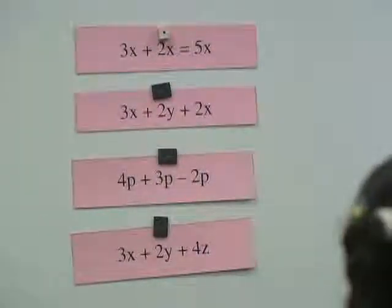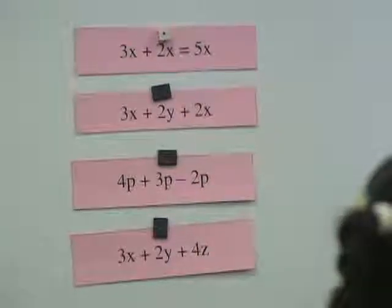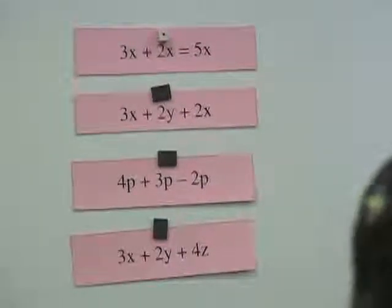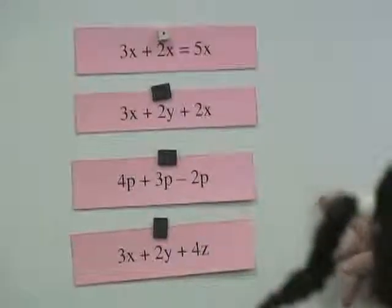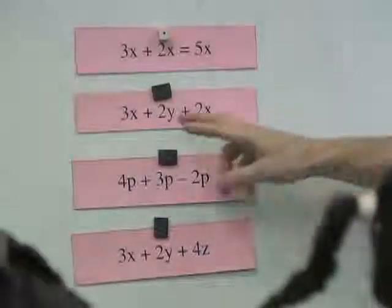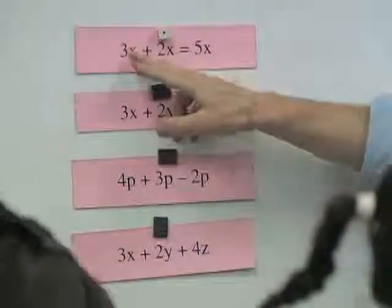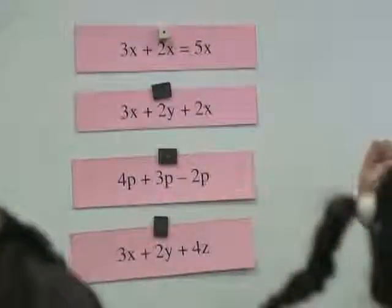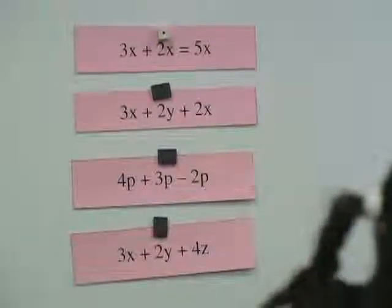All right, so tell us why you guys are grouped. Well, I think they're all the same because all the numbers seem to have a variable after it. Okay, every number has a variable after it — we've got number, variable, number, variable, number, variable — numbers and variables paired together. Yeah. They all have addition.